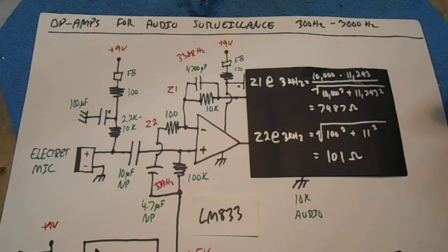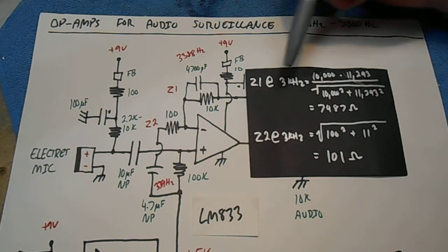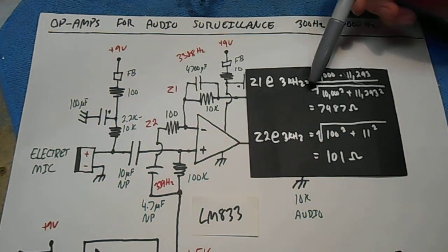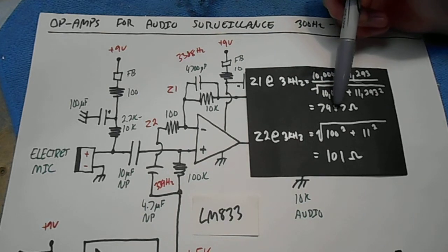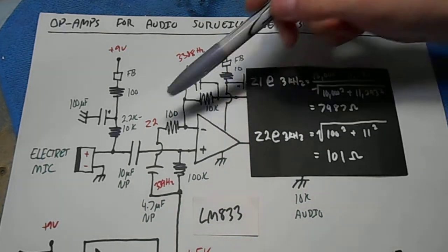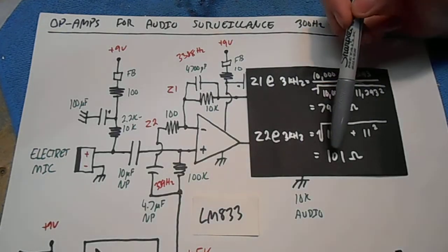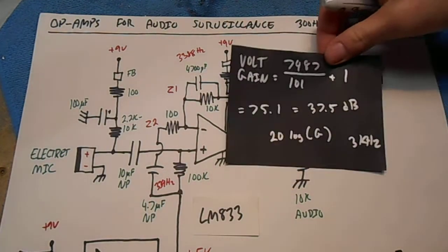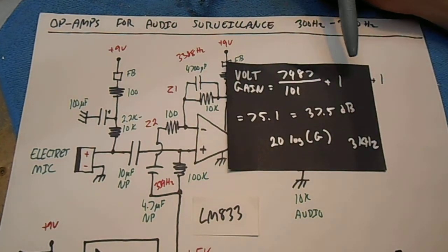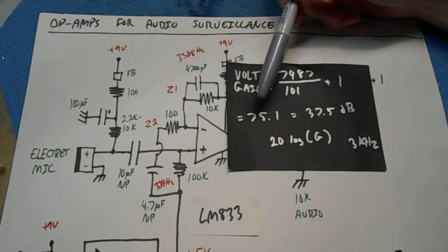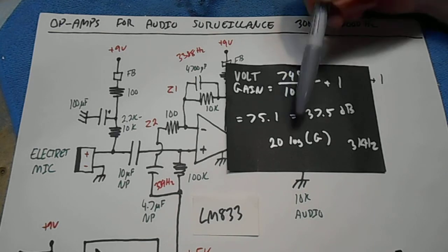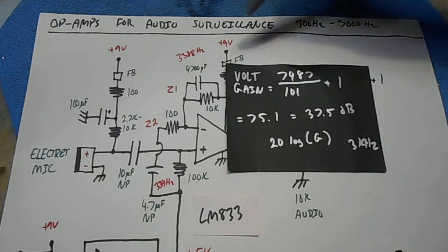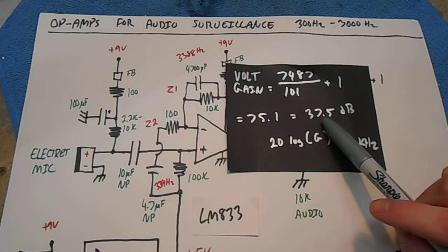Now we redo the equation using 3000 hertz for our input frequency. Our Z1 feedback impedance works out to 7,487 ohms. Our input impedance at 3000 hertz works out to 101 ohms. Put that into the standard voltage gain equation. 7,487 divided by 101 plus 1 equals voltage gain of 75.1. Convert that to decibels using the standard equation. And we get 37.5 decibels.